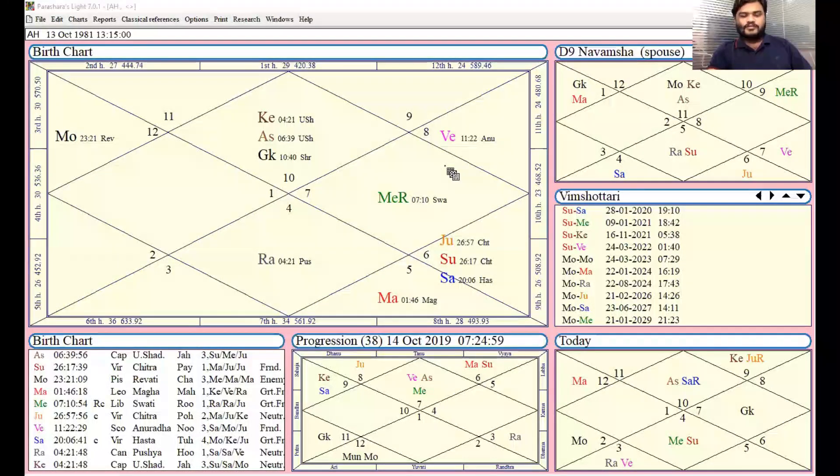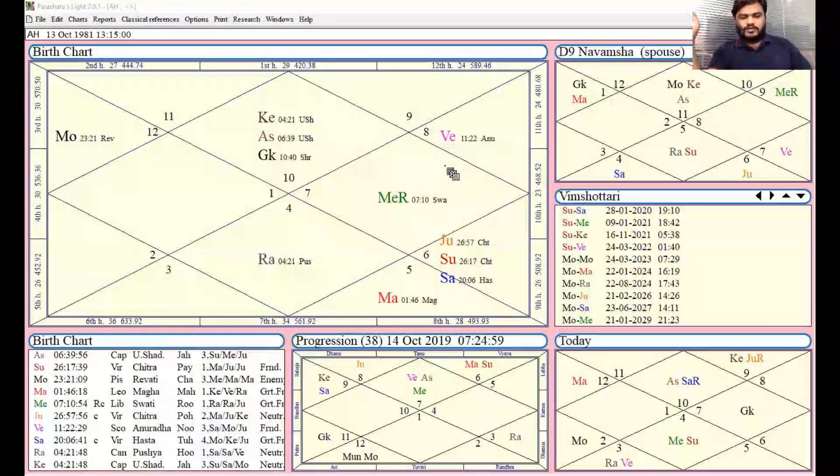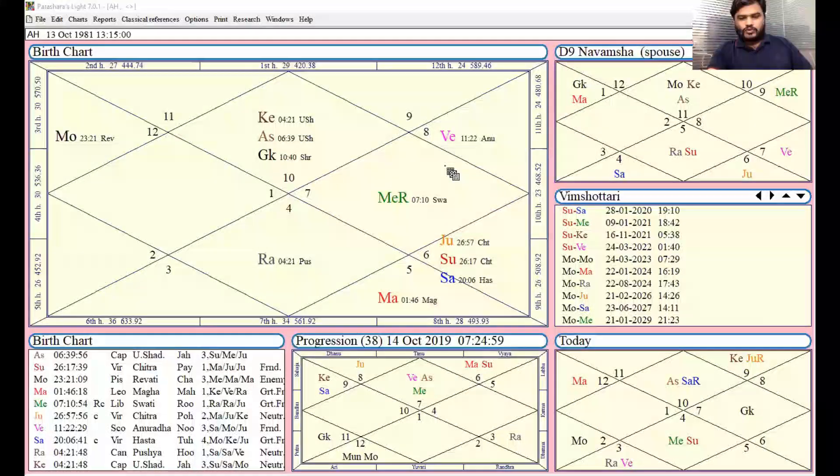The seventh house lord Moon is in the third house. The Moon is getting aspected by Jupiter, Sun, and Saturn. All these three planets are separative. Jupiter is a twelfth house lord, Saturn and Sun are natural separative planets. These three planets are directly aspecting the Moon. Moon is the lord of seventh house.